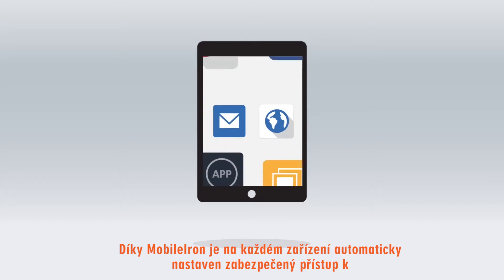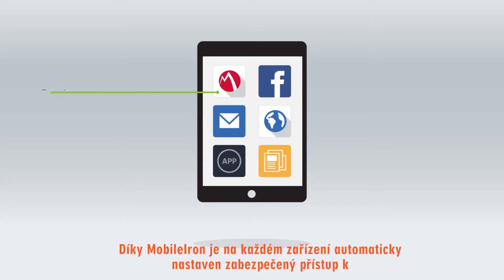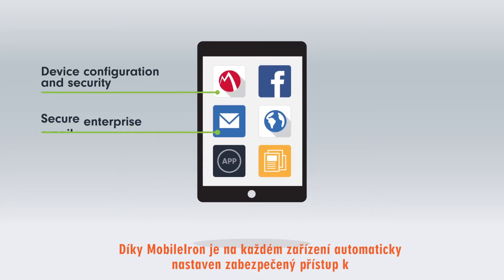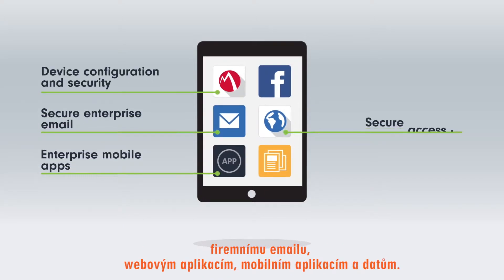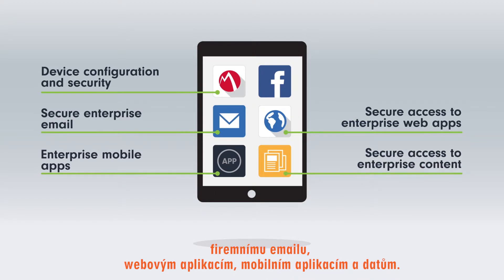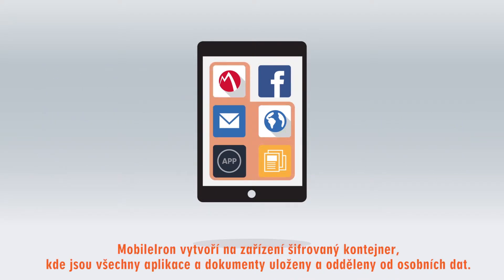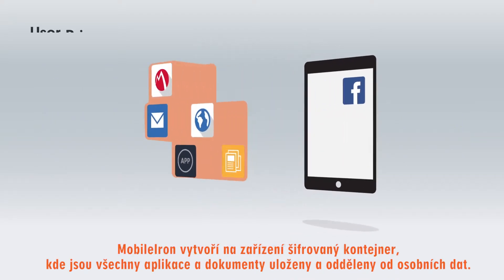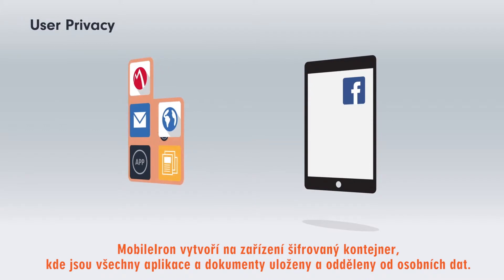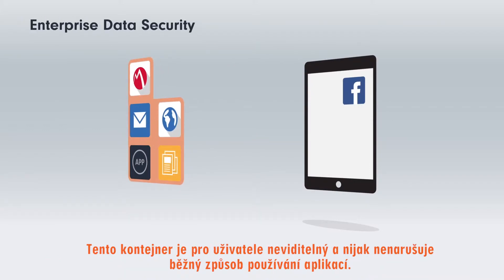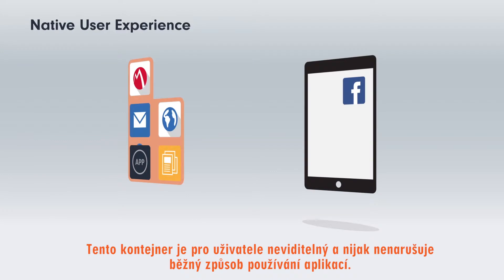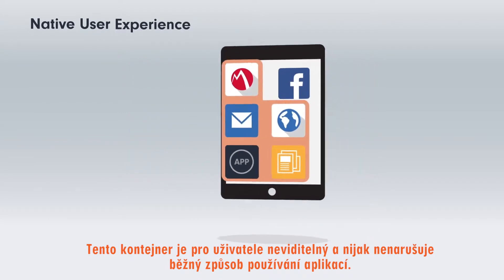With MobileIron, every device is configured with secure access to corporate email, enterprise web applications, mobile apps, and content. The MobileIron secure container on the device preserves users' privacy and ensures enterprise data security without interfering with the native user experience that mobile users expect.